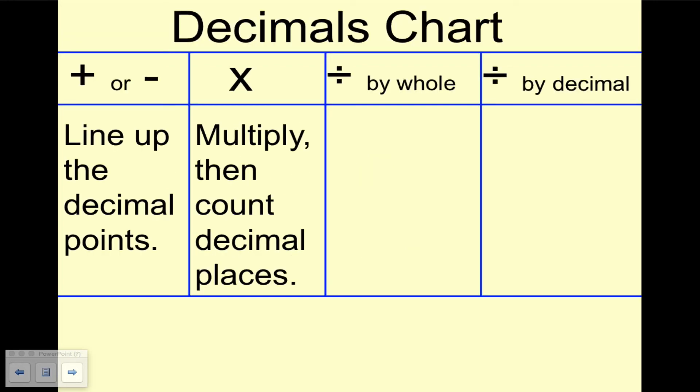Okay. Next, we're going to talk about how to divide a decimal number by a whole number. And the rule is the decimal point goes straight up.